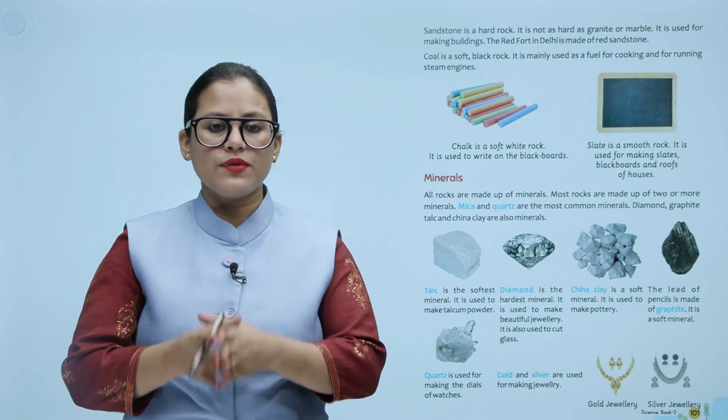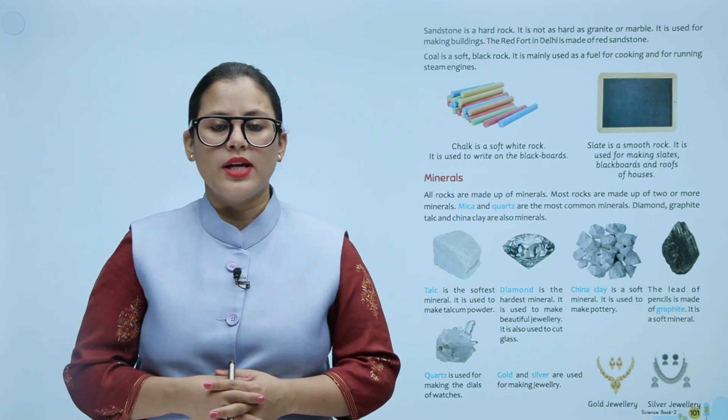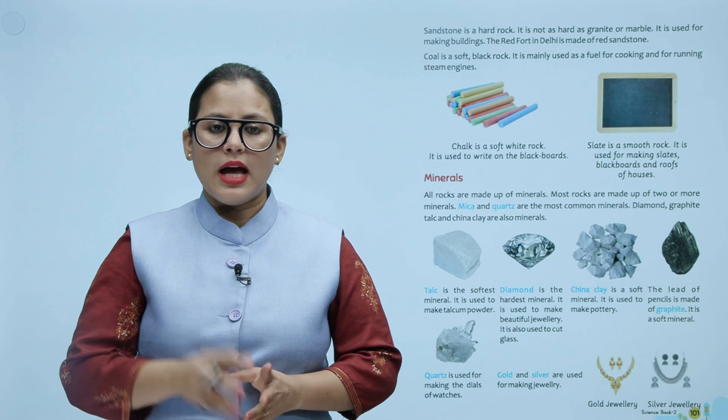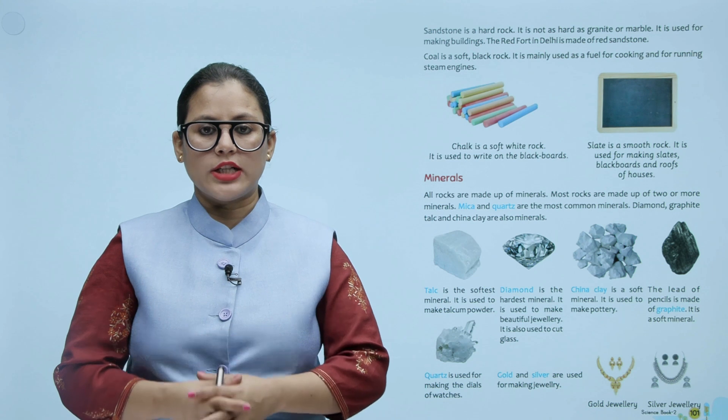Talc is the softest mineral. It is used to make talcum powder. Talc aapka softest mineral hota hai, jo talcum powder mein use kiya jata hai. Diamond is the hardest mineral. It is used to make beautiful jewelry. It is also used to cut glass. Diamond aapka hardest mineral hota hai. Jaise jewelry banane ke liye use kiya jata hai aur glass ko cut karne ke liye.